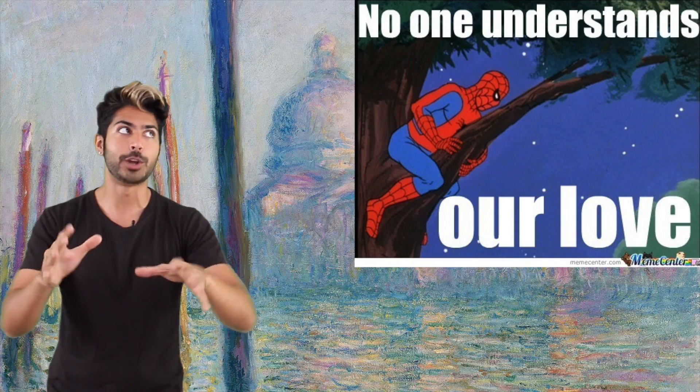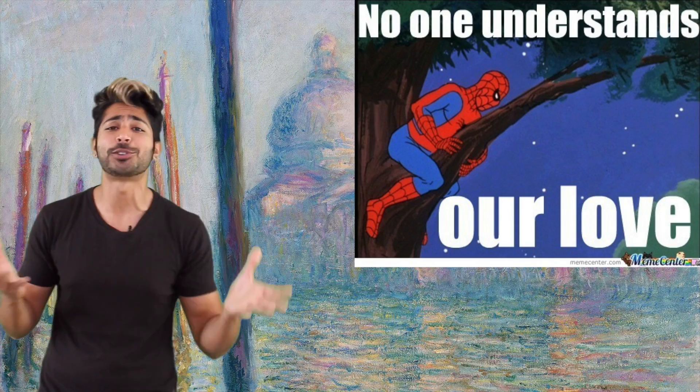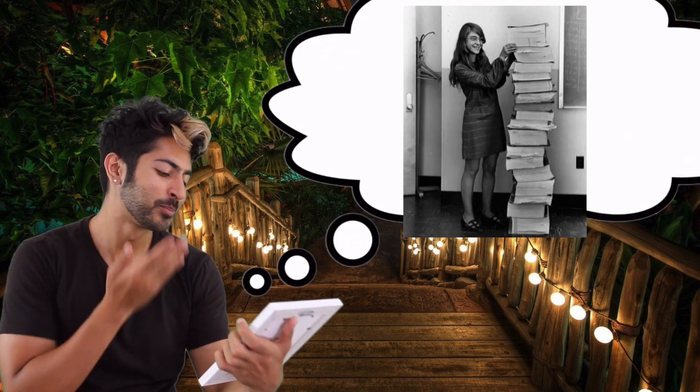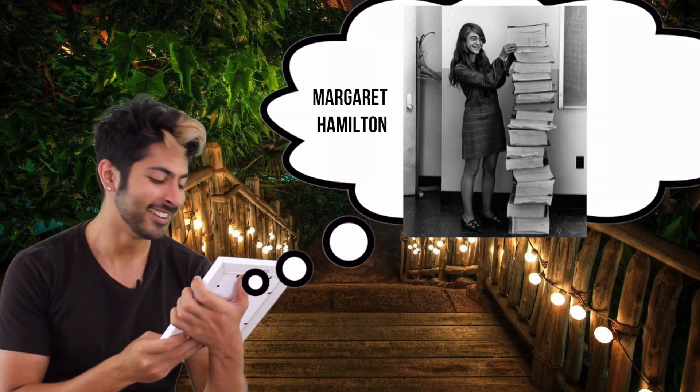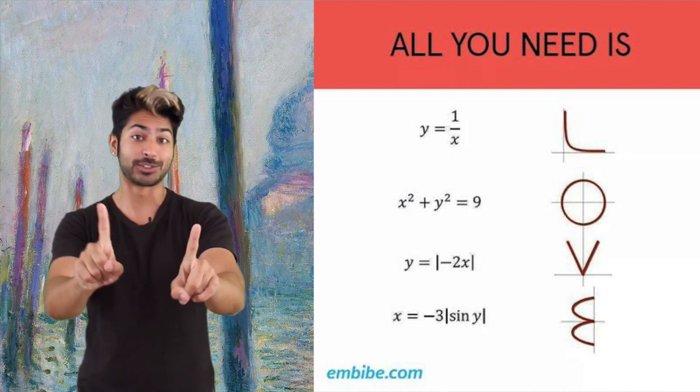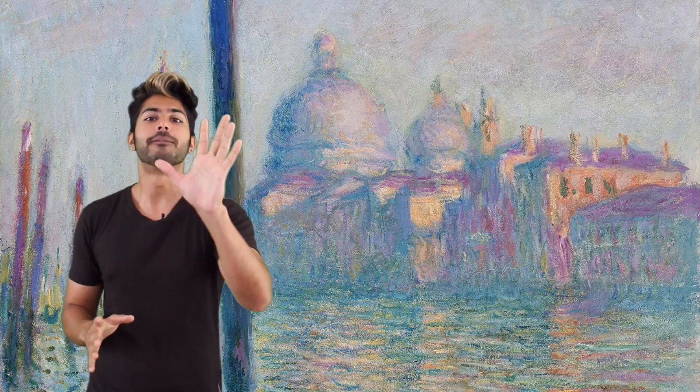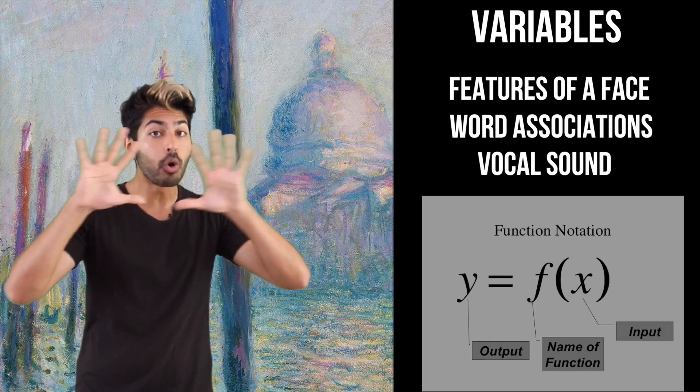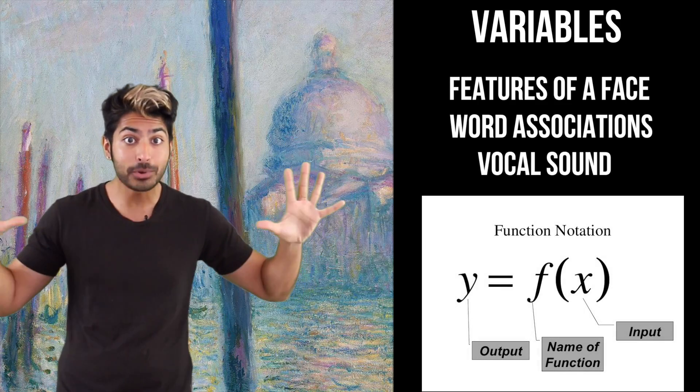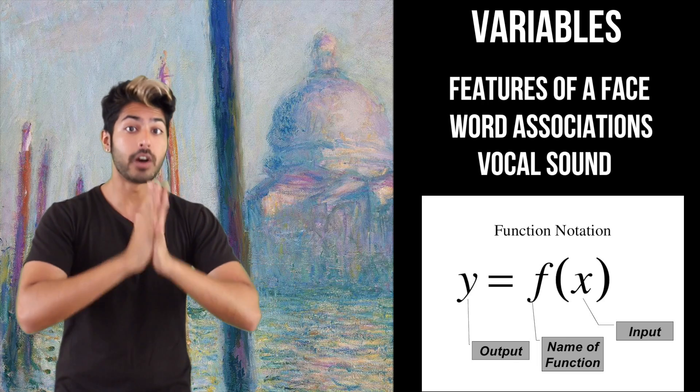You know that feeling you get when you're in love and you see that special someone? That magical, ethereal sensation that just can't be described by words, well it actually can be described by math. The features of a face, word associations, the tone of their voice, these are all related variables and we can represent this relationship using a function.